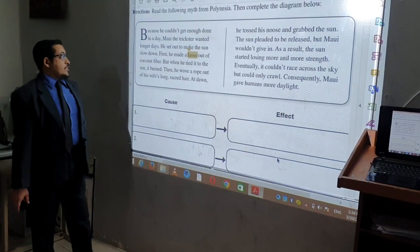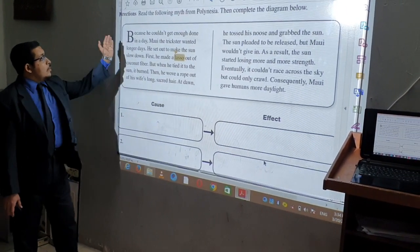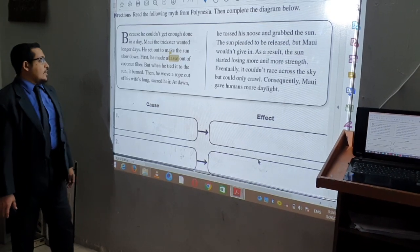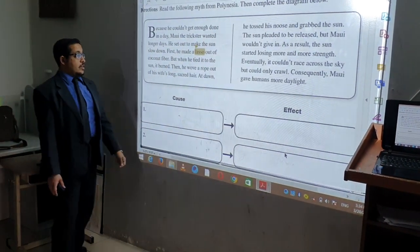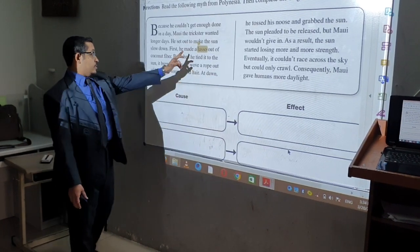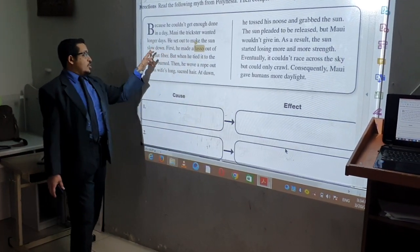Let's start by reading this one. Because he couldn't get enough done in a day, Maui wanted longer days. He set out to snare the sun. The sun slowed down.